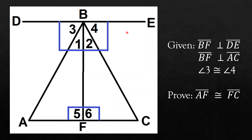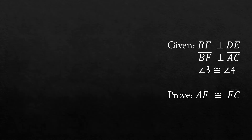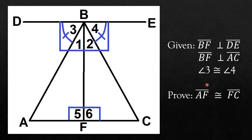We were given that line segments BF and AC are perpendicular. The consequence of this statement is that it will make angles 5 and 6 congruent, because perpendicular lines form right angles and all right angles are congruent. We were also given that angles 3 and 4 are congruent.